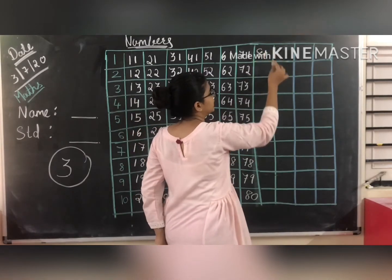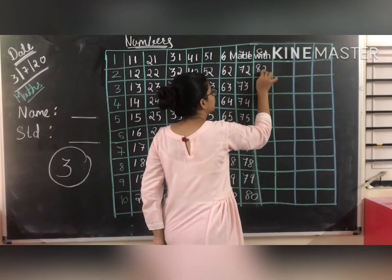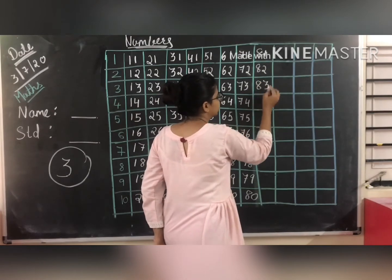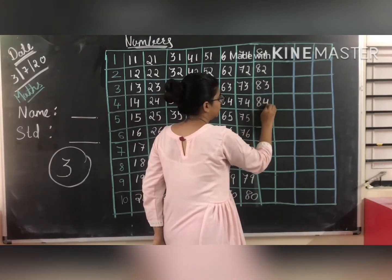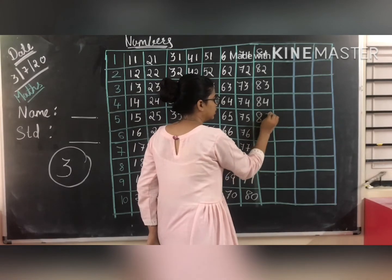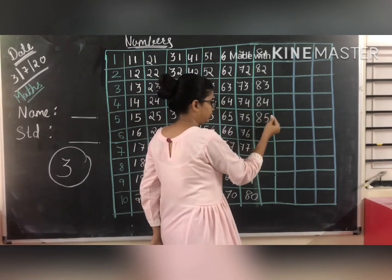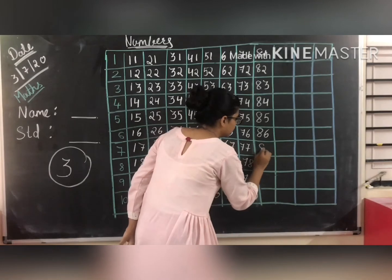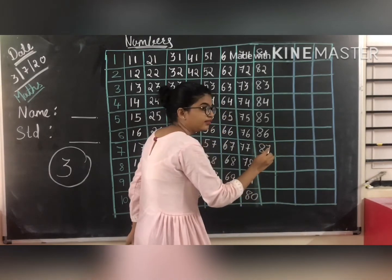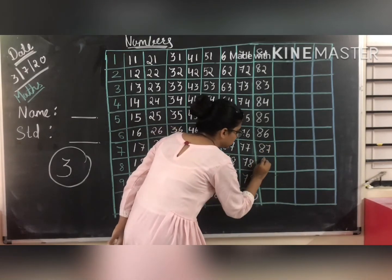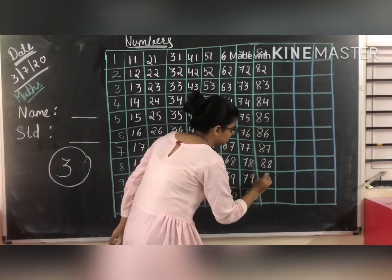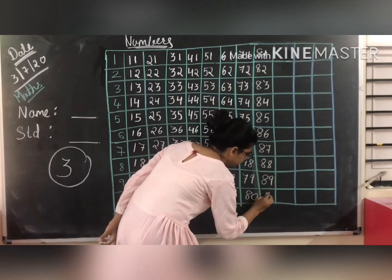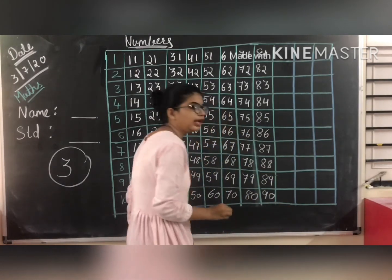81, 82, 83, 84, 85, 86, 87, 88, 89, and then 90.